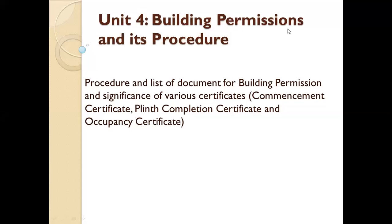After getting the approval, you cannot directly implement the plan — before starting construction you should have permission from the local authority or the municipal commissioner. The certificate you get for this is nothing but the commencement certificate. Once you obtain the commencement certificate, you can start the construction work at the actual site — first the line out, then excavation, then construction of footings, beams, and columns up to the plinth level.